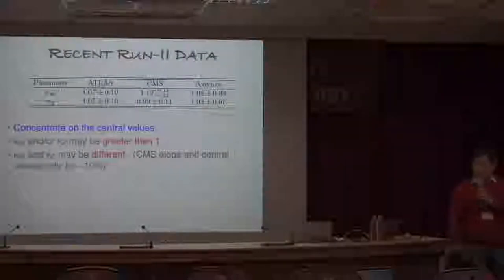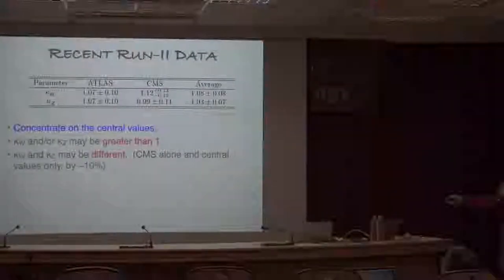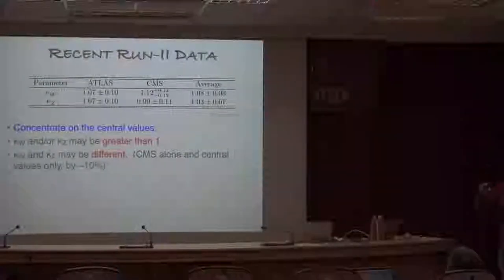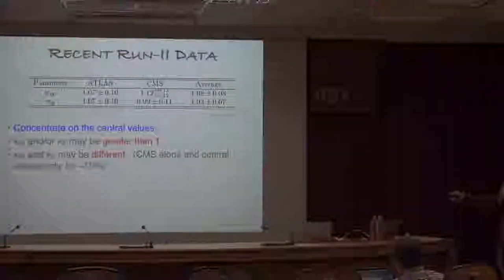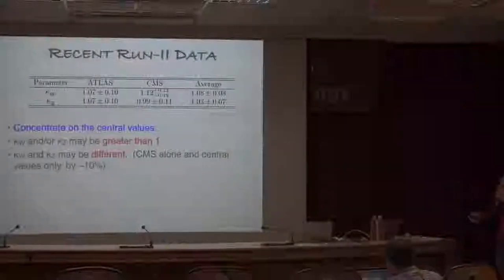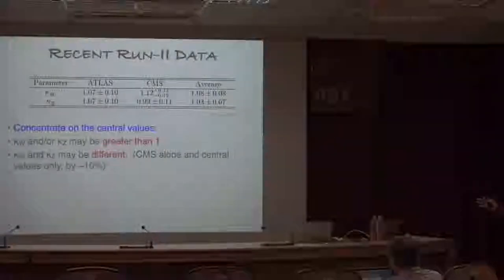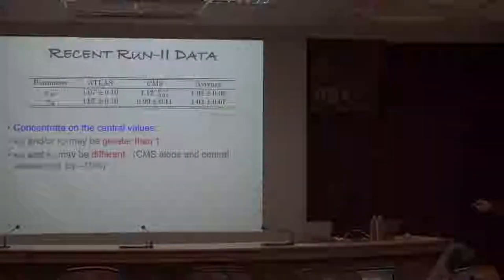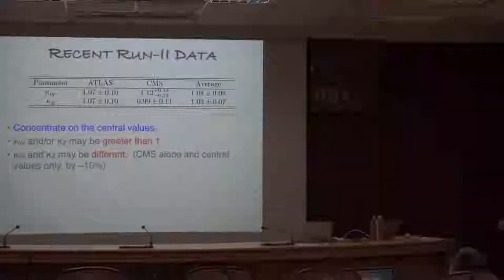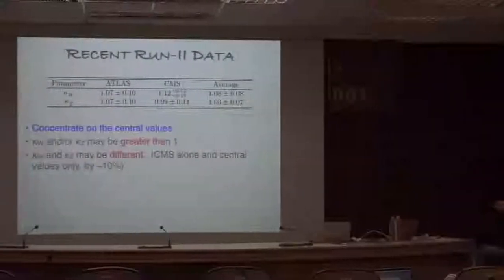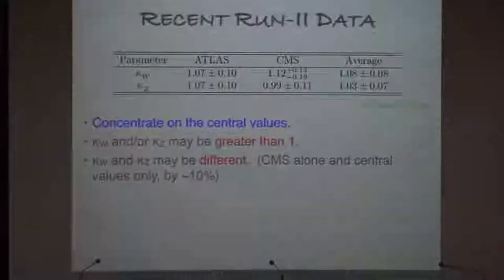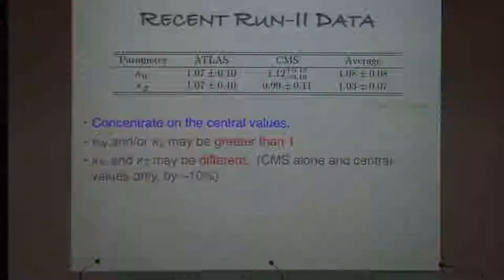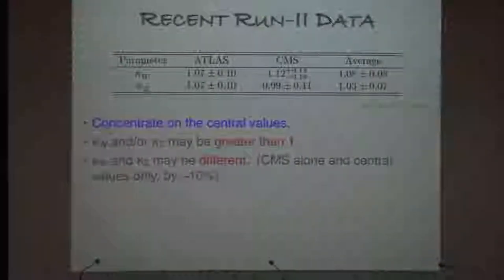Recently we learned from both ATLAS and CMS new measurements of kappa_W and kappa_Z. Here it is just the absolute value of kappa_W and kappa_Z. The ATLAS number is a little bit bigger than one and CMS is similar; here is the average of the two sets. For this talk, I want you to concentrate on the central values, because the central values motivate us to consider two properties: first, kappa_W and/or kappa_Z could be greater than one, and second, kappa_W and kappa_Z may be different — at the 10% level from the central values.